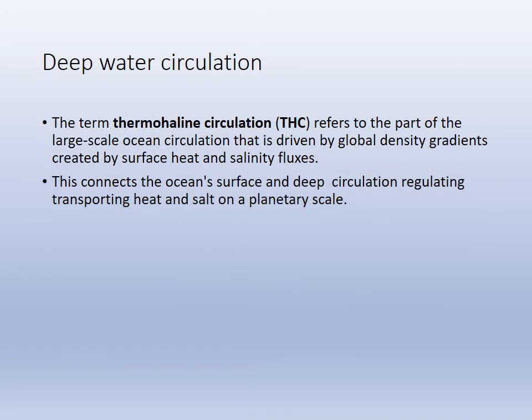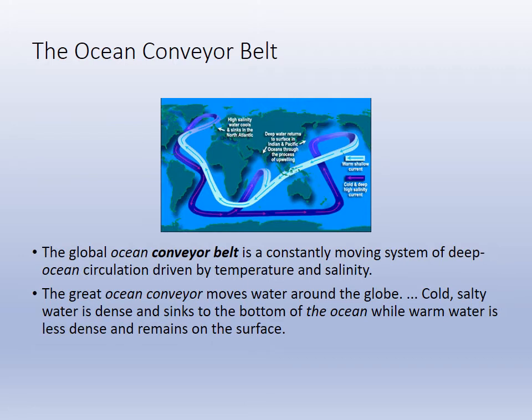Our deep water circulation is driven by the thermohaline. It's slow, but water sinks toward the poles and moves across the abyss. We call that movement the Great Ocean Conveyor Belt, and it helps moderate world climate by stabilizing ocean conditions.